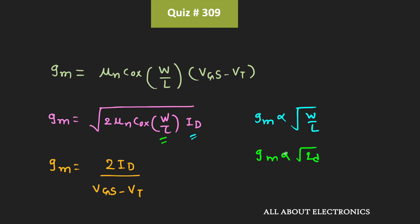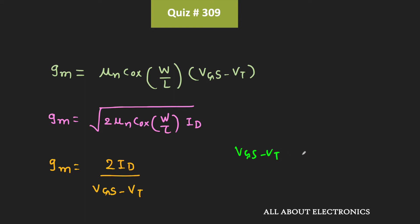Similarly, when the W/L ratio is kept fixed, transconductance gm is proportional to the square root of id. If we look at the third expression, whenever Vgs-Vt is kept fixed, transconductance gm is linearly proportional to the drain current id. On the other hand, when the drain current id is kept fixed, transconductance gm is inversely proportional to Vgs-Vt.